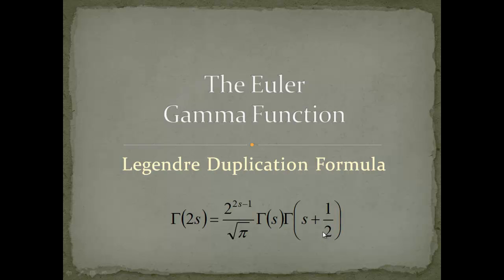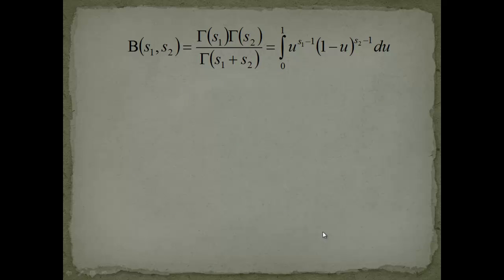Let's have a look at how Legendre derived this cool relationship. This smells like the beta function, which is defined as gamma of s1 multiplied with gamma of s2 over gamma of s1 plus s2. We take the power representation — as opposed to the trigonometric representation with sine and cosine seen in the previous video — and we will plug in special values.